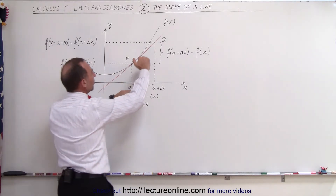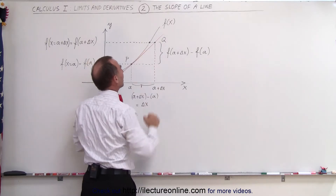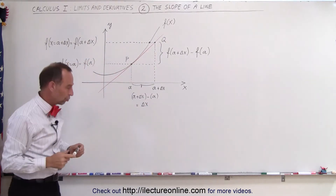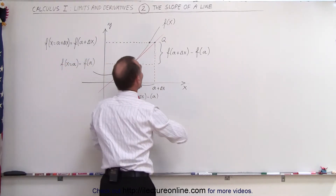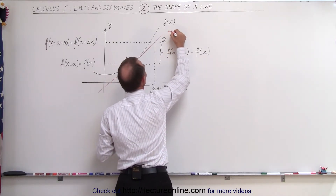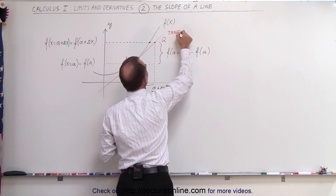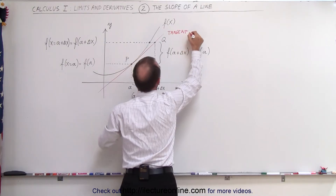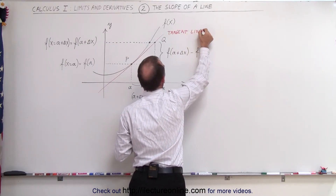Notice that the height would be the same for the function as it is for the tangent line — the red line that I drew. The red line represents what we call the tangent line, where the line touches the function at point P right here. So this can be considered the tangent line.